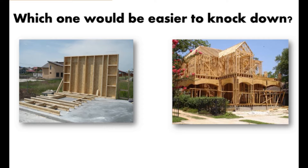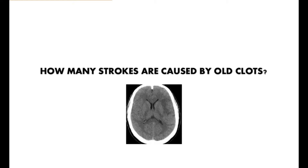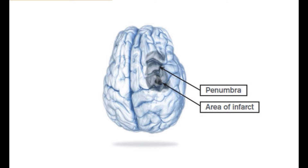How many strokes are caused by old clots? The answer is we don't know. When somebody presents with ischemic stroke symptoms, all we know is that they're presenting with stroke symptoms. We get a CT right away to make sure there's no bleed, but when we see a hypodense spot on the CT, we really don't know if it's an old clot or a new thrombus or embolism. What we do know is that the direct area of infarct is going to die within three minutes.